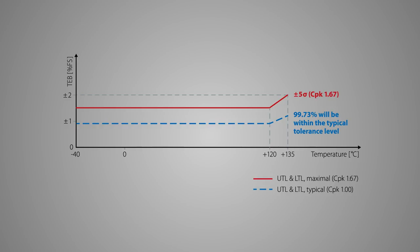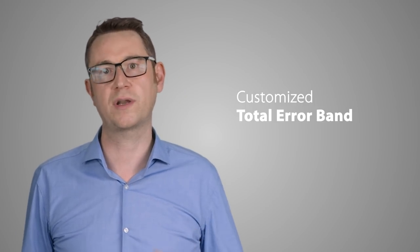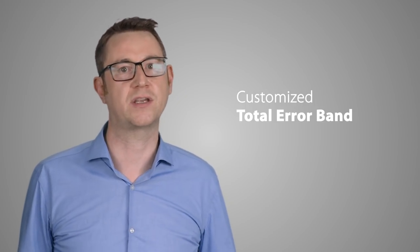The blue line shows the typical value that corresponds to 3 sigma limits and CPK of 1. A measurement of the exhaust back pressure of a running engine needs to be more accurate at high temperatures, where the measurement in a cooling application requires an accurate measurement at lower temperatures. Therefore, Danfoss can provide customized total error bands according to the requirements in the application.